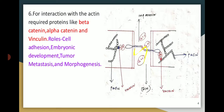The extracellular component gives a very close association with the help of Ca2+ ions. Intracellularly, important actin filaments are connected with the help of alpha-catenin, beta-catenin, and vinculin. The roles of cadherin include cell adhesion, embryonic development, tumor metastasis, and morphogenesis.